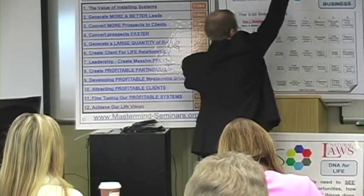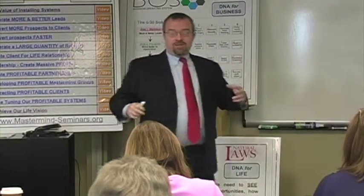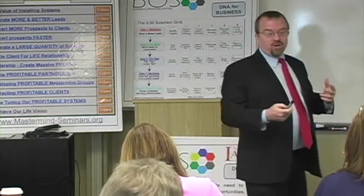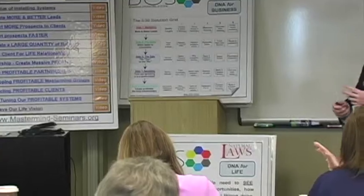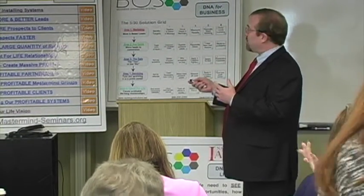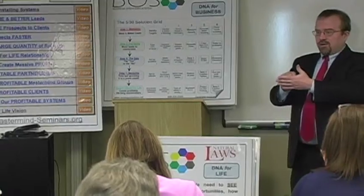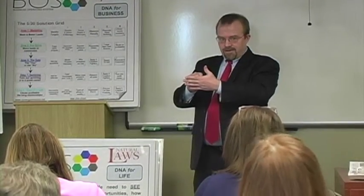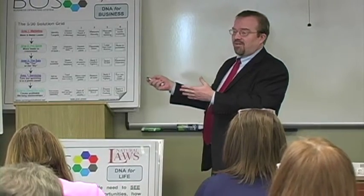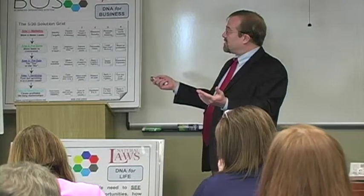If you're able to stay around for lunch we can go ahead and answer some of those questions, because there is so much we're going over in such a short period of time. The three elements to the BOSS system is DNA for people — that's what Wendy went over. When you look at your biggest challenge, the one you all want to solve, it may come in the DNA for people, or it may be a DNA for business, which is the 530 grid.